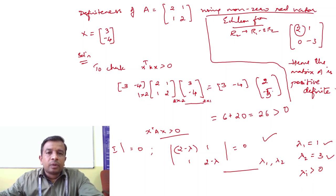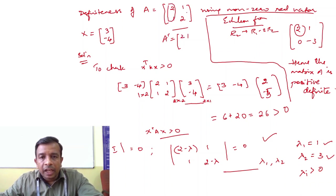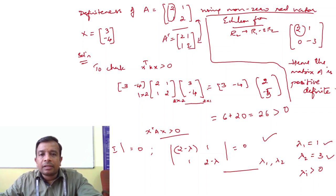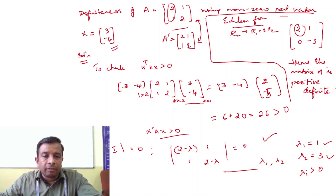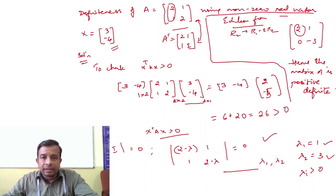Let us take an example: check for positive definiteness of matrix [2, 1; 1, 2]. If you observe, A transpose equals A, so it is a real symmetric matrix. Using the non-zero real vector x = [3, -4], we check the first condition: x transpose K x. We take x transpose as [3, -4] row, multiply by matrix A = [2, 1; 1, 2], and then by x = [3, -4] column.